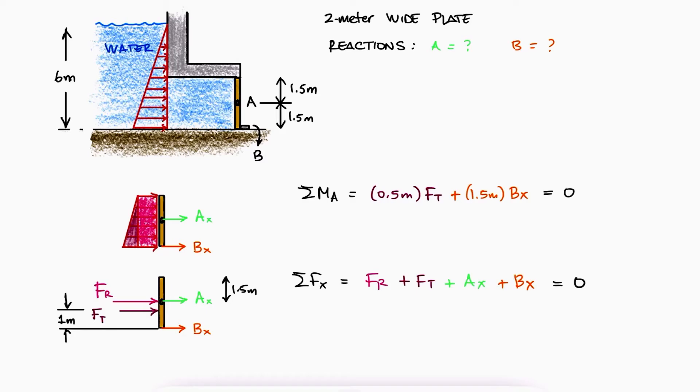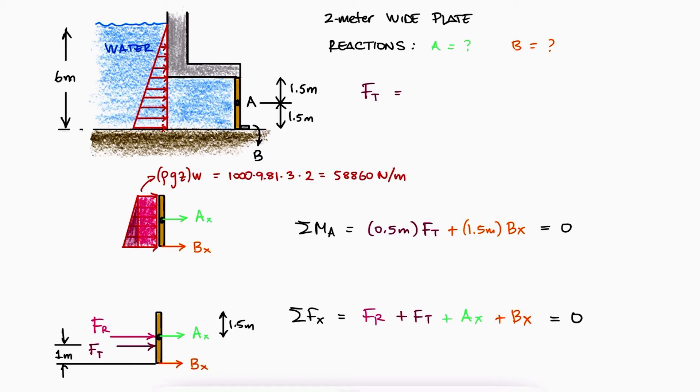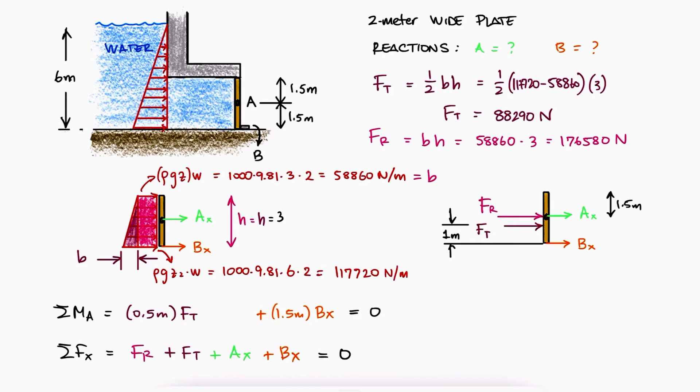The equivalent point load of the triangular distributed load depends on the pressure on the top and the bottom of the gate. The base of the triangle is the difference between these two and the height is that of the gate. The equivalent point load of the rectangular distributed load would be the area of that rectangle.